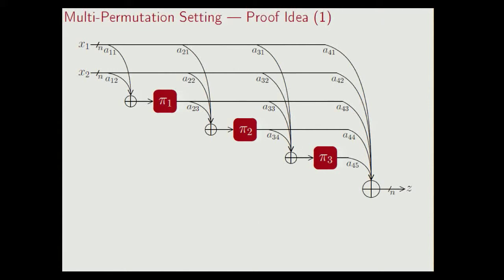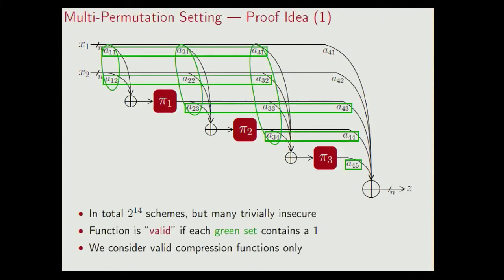This brings me to the definition of a valid compression function. To this end, we identify eight green sets — five horizontal, three vertical. We say that the compression is valid if in each of the green sets there is a non-zero element. Suppose in the first horizontal set, a11, a21, and a31 are all zero — that would mean that x1 is never used as input to a permutation, and you can find collisions in a constant number of queries. So this definition of validity is essentially introduced to get rid of all the trivially insecure compression functions, and it suffices to consider valid compression functions only.